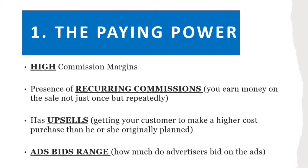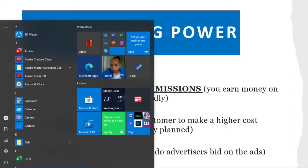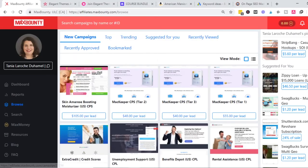Tip number one is to analyze the paying power of the affiliate product. I'll show you four strategies to measure paying power. Strategy one is high commission margins — I like to go with affiliate products that have higher commissions. Let me show you an example in my MaxBounty account.